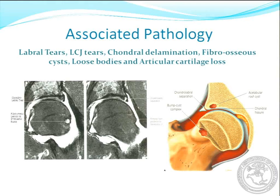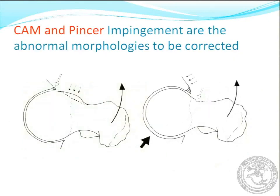You can have labral tears, chondrolabral junction delamination, fibrosis, et cetera. Basically, what you want to do is get rid of the conflict. On the left you see the CAM, and on the right you see the pincer. We just want to get rid of the excessive overgrowth on the rim and the excessive head-neck junction.